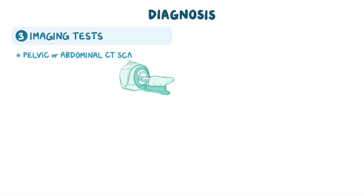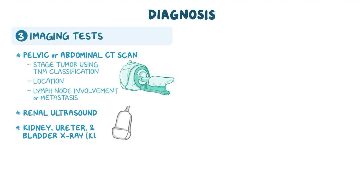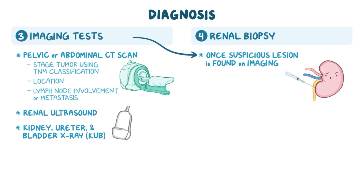Imaging tests like a pelvic or abdominal CT scan can be used to stage the tumor using the TNM classification by defining the location and looking for lymph node involvement or metastasis. Additional imaging tests include renal ultrasound and a kidney, ureter, and bladder x-ray (KUB). Once a suspicious lesion is found on imaging, a renal biopsy is performed to confirm the diagnosis.